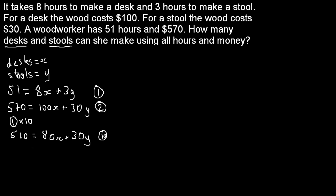Now I can do equation 2 minus equation 1a. 570 minus 510 leaves us with 60. 100x minus 80x leaves us with 20x. And 30y minus 30y leaves us with 0. So we've got one variable on its own. We divide both sides by 20, and we get x equals 3.